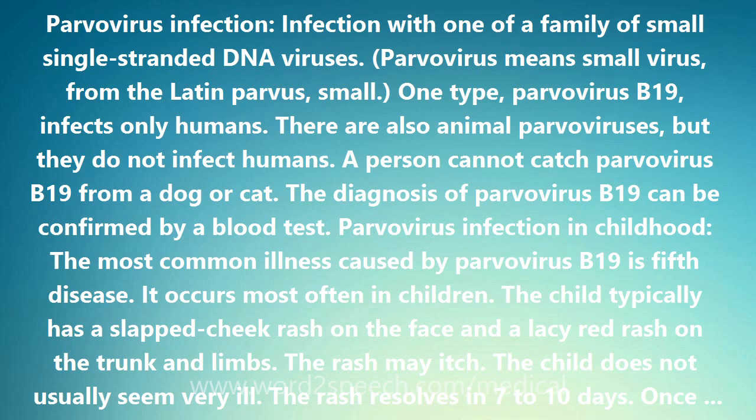Parvovirus Infection During Pregnancy: Parvovirus B19 infection during pregnancy can cause a miscarriage or cause the unborn baby to have severe anemia. This occurs in less than 5% of all pregnant women who are infected with Parvovirus B19, most commonly during the first half of pregnancy. There is no evidence that Parvovirus B19 infection causes birth defects or mental retardation.